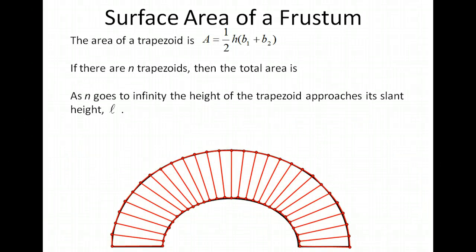We're going to start with the formula for the area of one trapezoid: one half the height times the sum of the two bases. Since we have n trapezoids that form the frustum, we're going to multiply our formula by n.